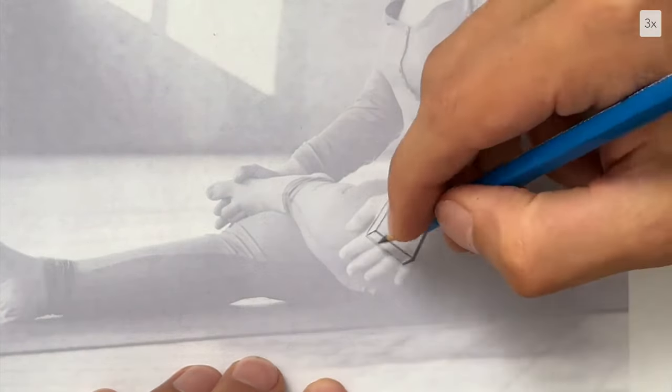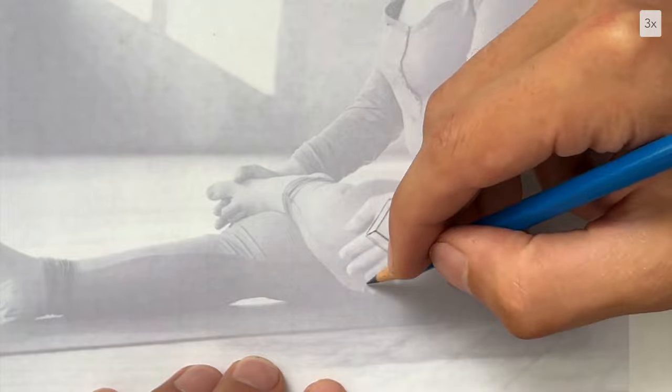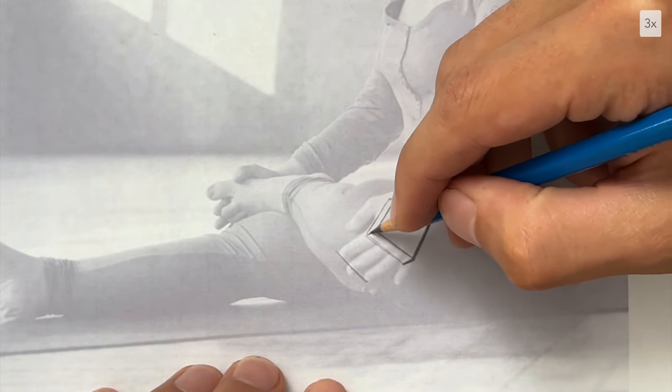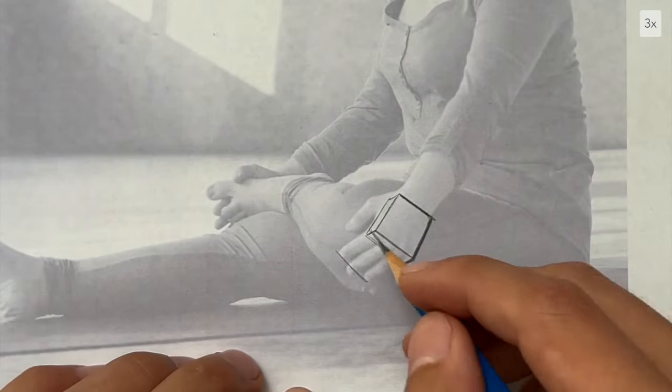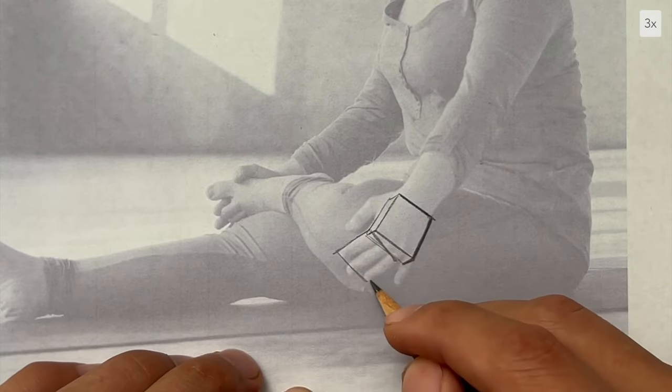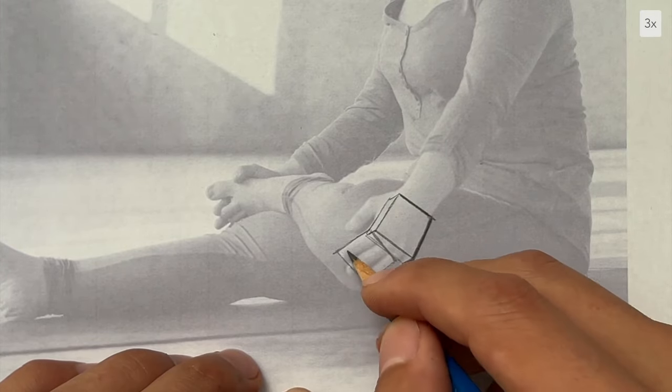Here I am analyzing the direction of the form. These fingers are going to be cylinders, but I'm starting by establishing a plane in perspective to orient myself. Then I add the fingers.